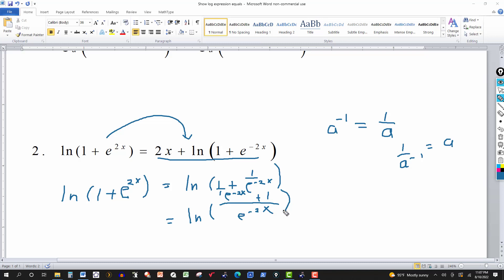Now I have the natural log of a fraction. So again, using property of logs, if I have the natural log or log to any base, I have a fraction. That's the same as the log of the numerator minus the log of the denominator. So this would give me then, this would be the same thing as ln of e to the minus 2x.